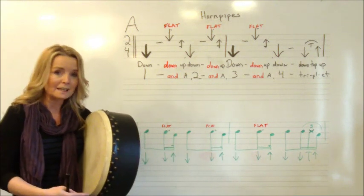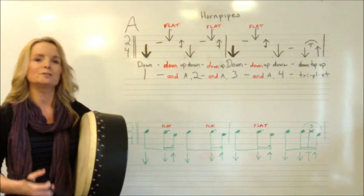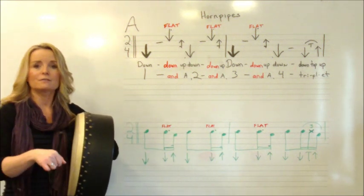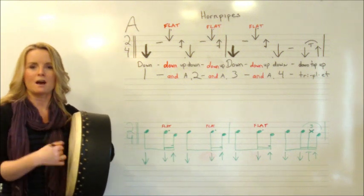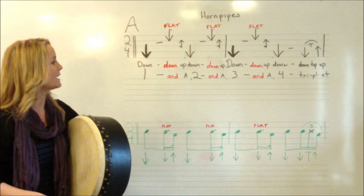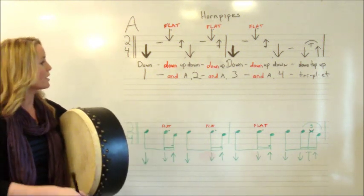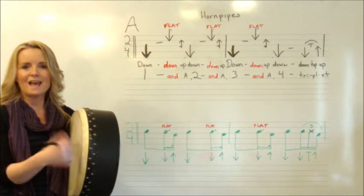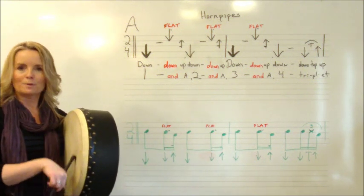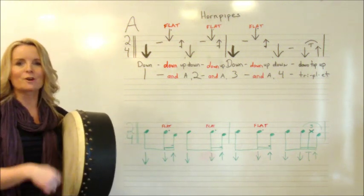We're going to try this really slowly. If you find there's a way of saying this that really works for you, I would suggest doing that. So I like to say down, down, up, down, down, up, down, down, up, down, down, top, up. So down, top, up is just triplet. Try to do that nice and even. Or you can say one and a two and a three and a four, triple it.